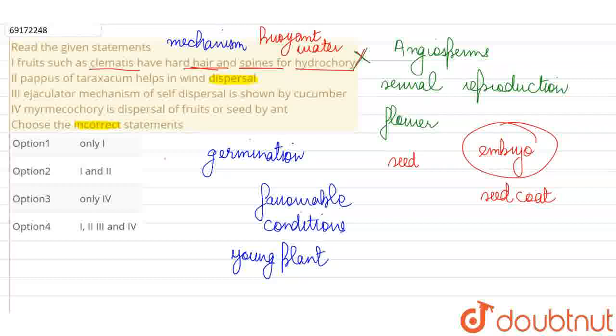If you look at the rest, it says Taraxacum, which has pappus in wind dispersal. We can say pappus is a kind of calyx modification. What is calyx? In the flower, there are sepals which we call calyx.